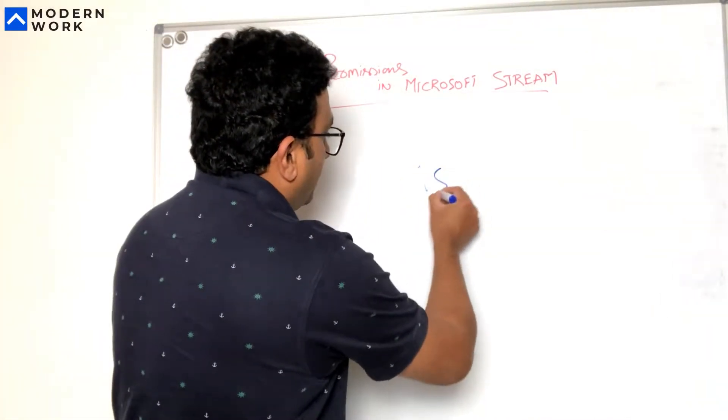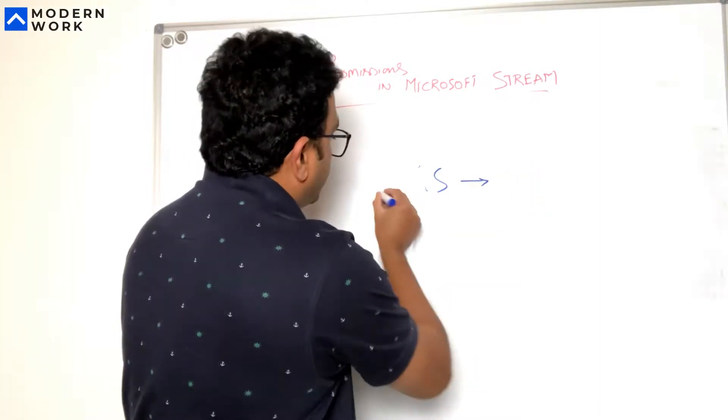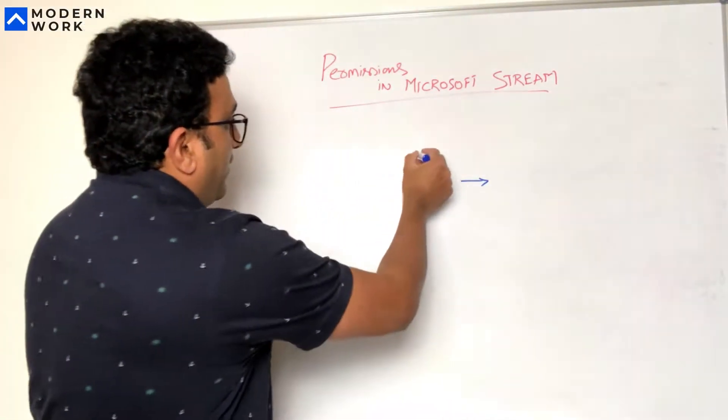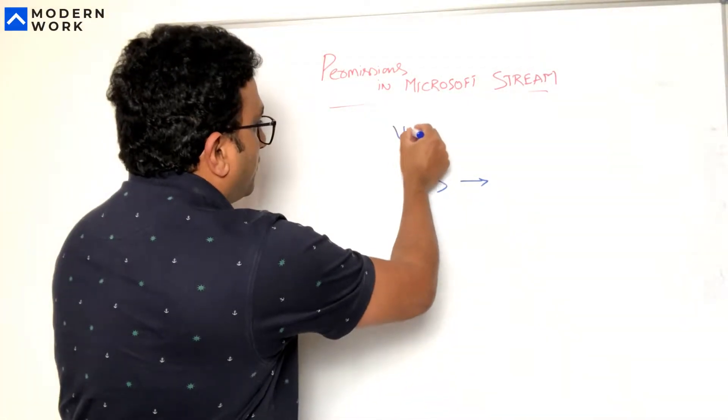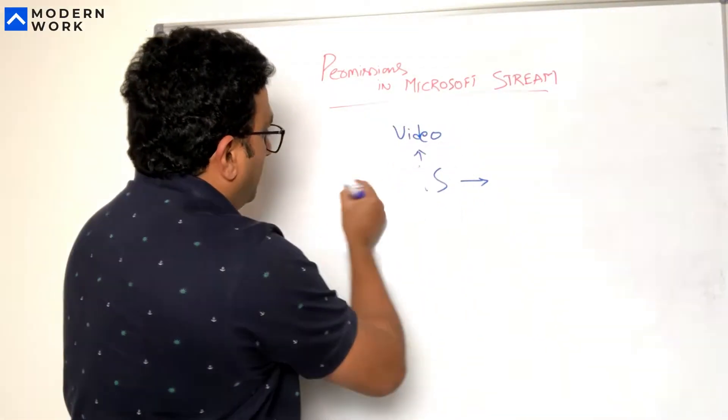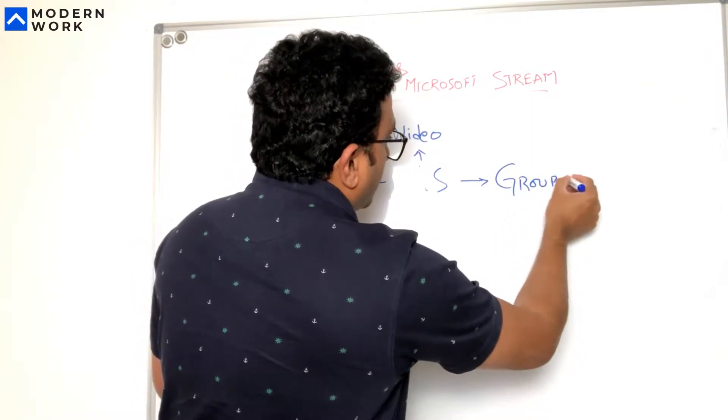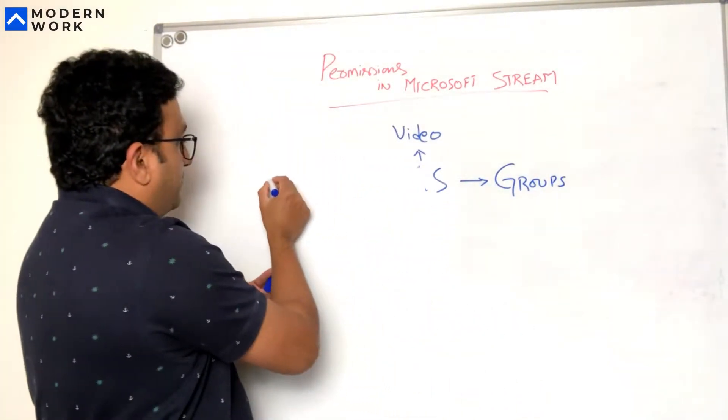As you've seen in Microsoft Stream you have three things, okay. We have the core of it is the video, then we have groups, and we also have channels.